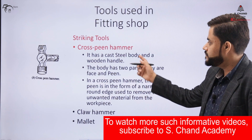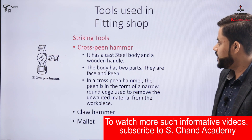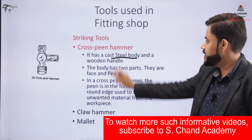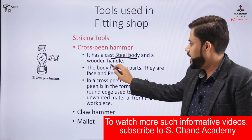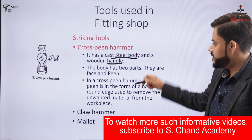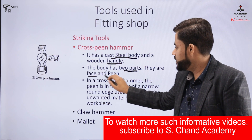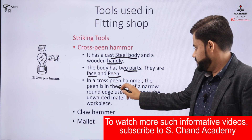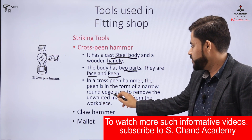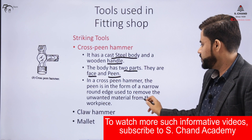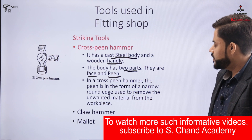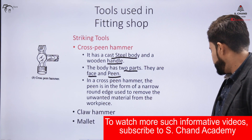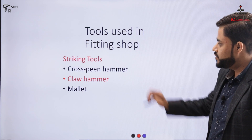The cross-peen hammer has a cast steel body and a wooden handle. It has two main parts: the face and the peen. The peen is in the form of a narrow rounded edge, which is used to remove unwanted parts from the workpiece. The diagram indicates the cross-peen hammer.